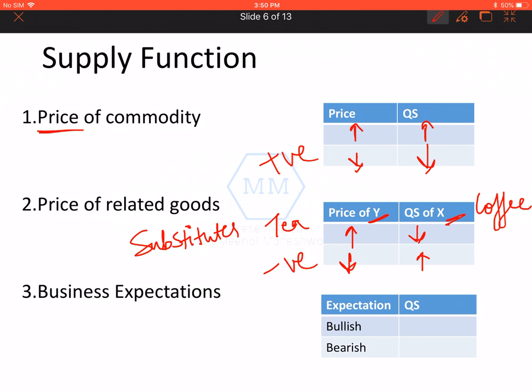Teesra important factor hai business expectations. Future mein kya lag raha hai ki kaunsa business grow karne wala hai aur kaunsa business ka growth kam hone wala hai? Bullish expectation hai, matlab in future you feel ki business ke ache prospects hai, tho aise case mein quantity supplied badh jayegi, kyunki investments badh jayenge us business mein. Aur wahi agar bearish expectations hain, tho aise case mein quantity supplied kam ho jayegi.